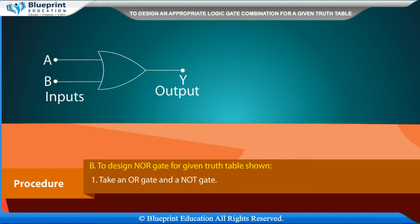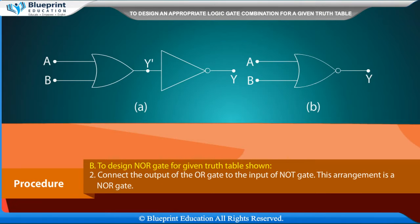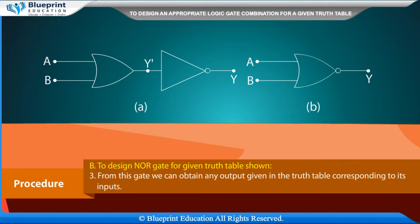To design a NOR gate for a given truth table: take an OR gate and a NOT gate, and connect the output of the OR gate to the input of the NOT gate. From this gate we can obtain any output given in the truth table corresponding to its inputs.